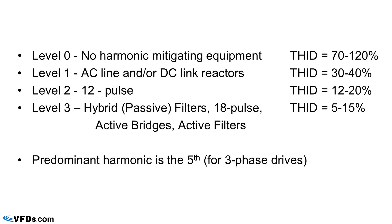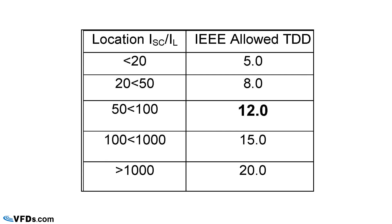So the question is, how good do we need to be? Take a look at this diagram from IEEE 519. If we have a very strong system — that would be an I short circuit to I load of greater than 1000 — they will let us have 20% harmonics. If we have a very weak system, that would be a system in which we have less than 20 short circuit to load ratio, and we have to maintain 5% harmonics. In reality, 95% of the systems will be in the 12 or 15% category. I've highlighted the number 12 — in 98% of the instances, if you keep 12% distortion, then you will comply with IEEE 519.